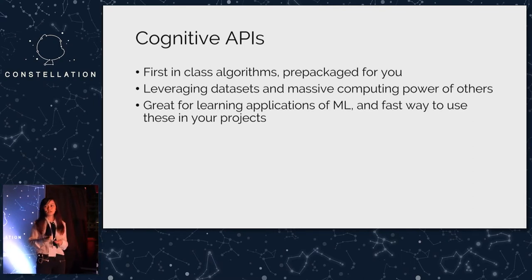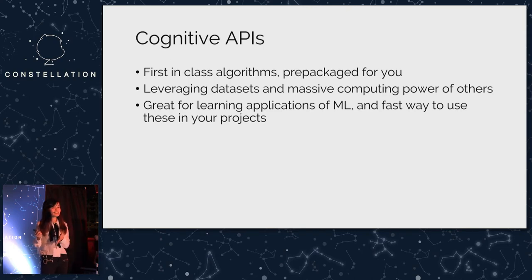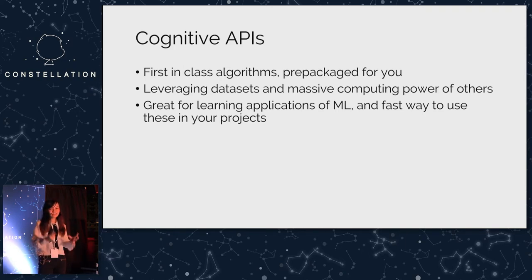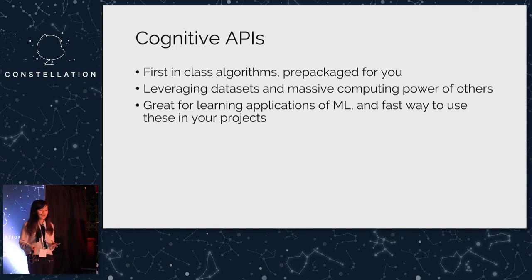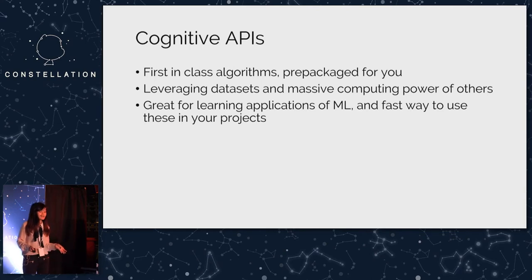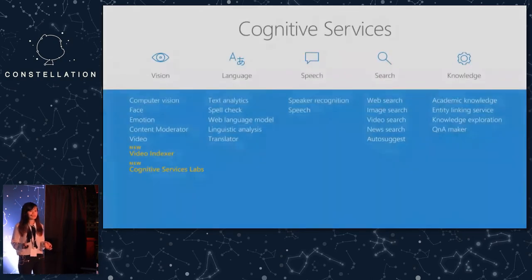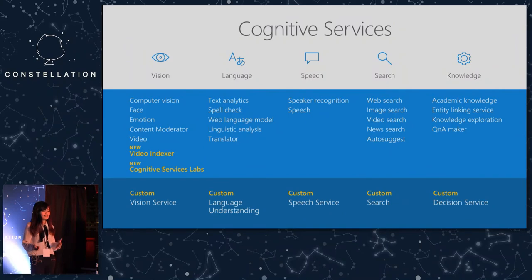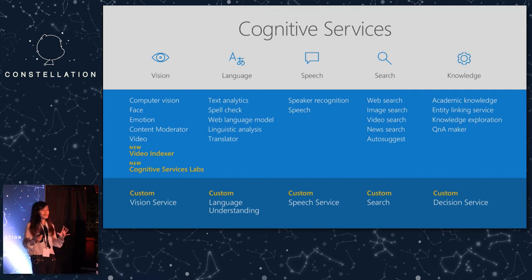Starting with cognitive APIs — you may have seen face recognition APIs, speech-to-text, text-to-speech APIs. There's nothing wrong with using these; large companies have dedicated data science teams that make first-in-class algorithms you can just plug and play into your application. You're already leveraging massive computing power and data sets. These APIs cover vision, language, speech, search, and knowledge — including computer vision, emotion recognition, and sentiment analysis.